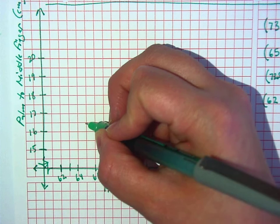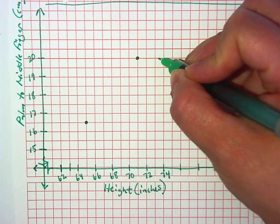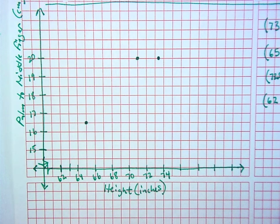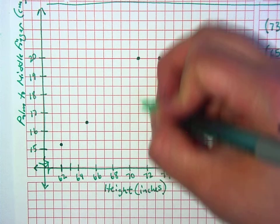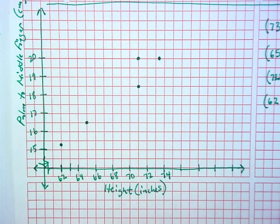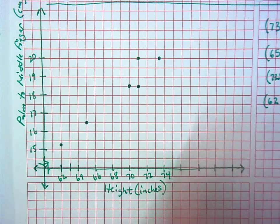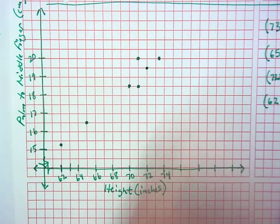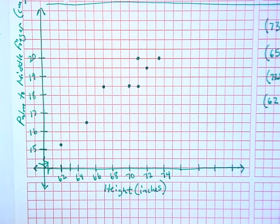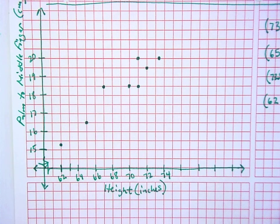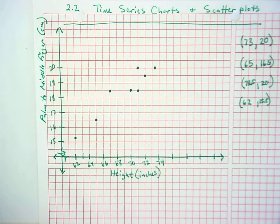65 and 16 and a half. 73 and a half and 20. 62 and 15.5. 71 and 18.5. 70 and 18.5. 72 and 19.5. And 67 and 18.5. 71 and 18.5.